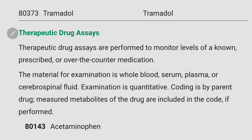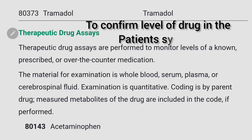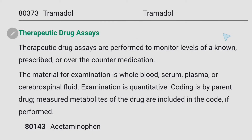After the definitive drug class listing, there are therapeutic drug assays. Therapeutic drug assays are performed to monitor levels of known prescribed or over-the-counter medications — these drugs require regular monitoring to confirm the level of drug in the patient's system. Just go through the code range provided.